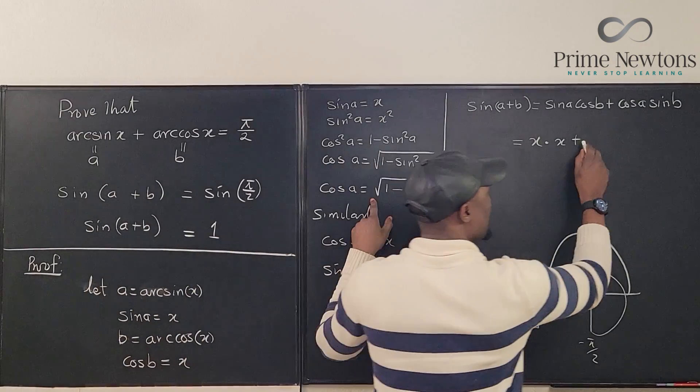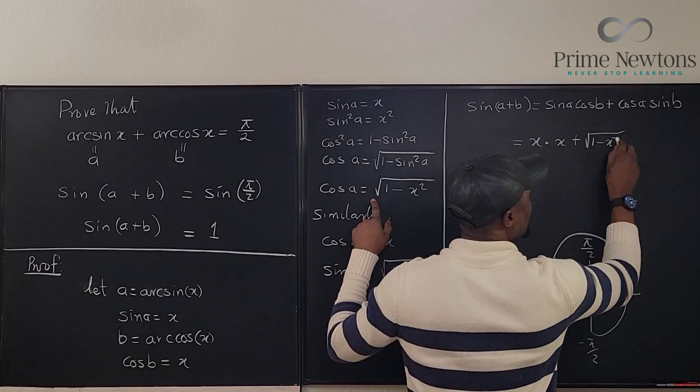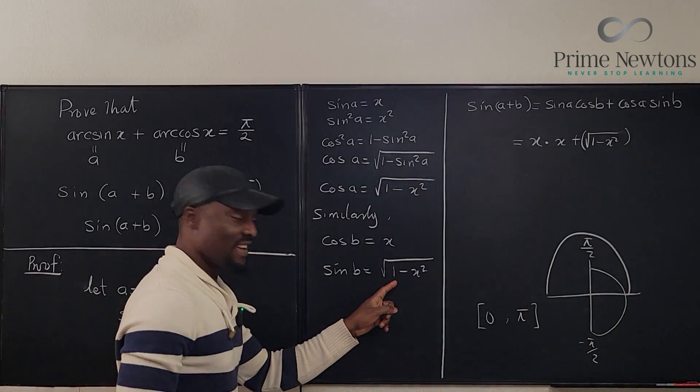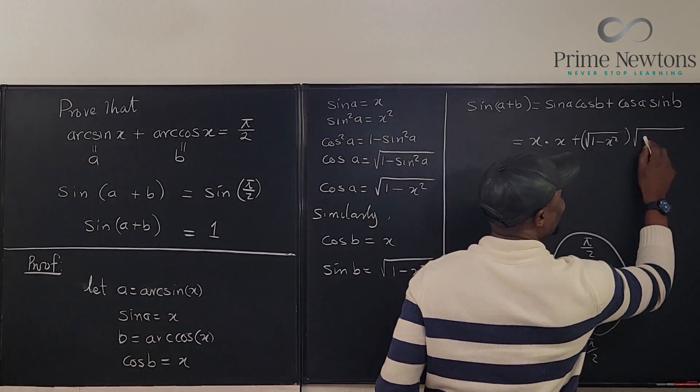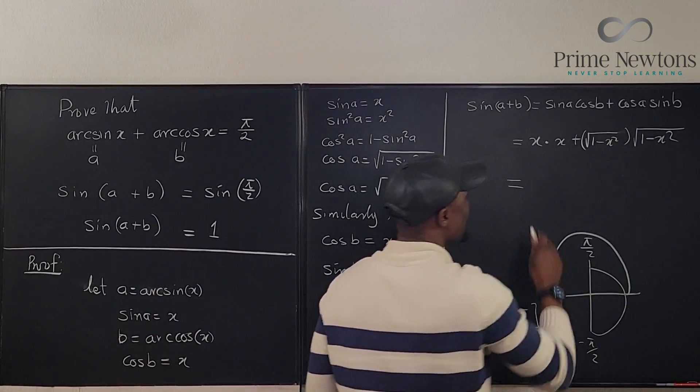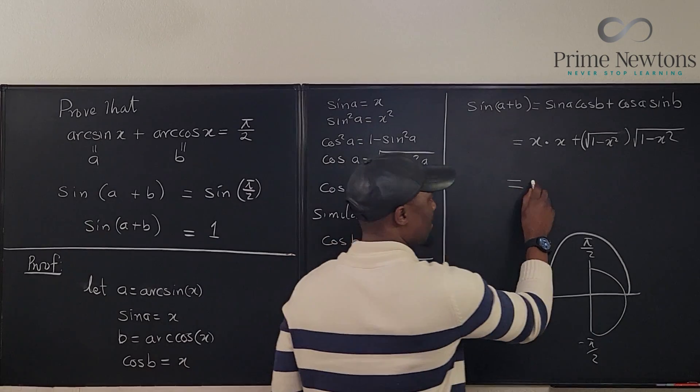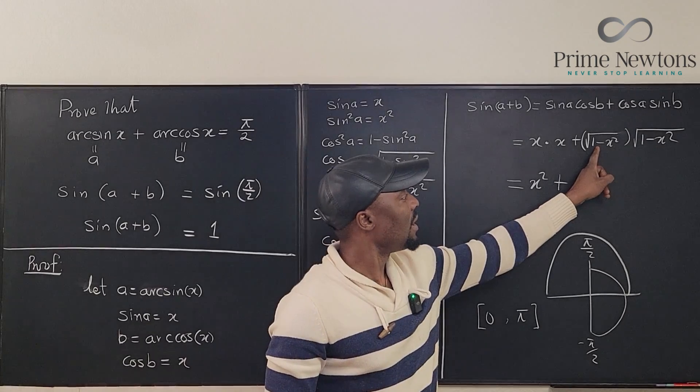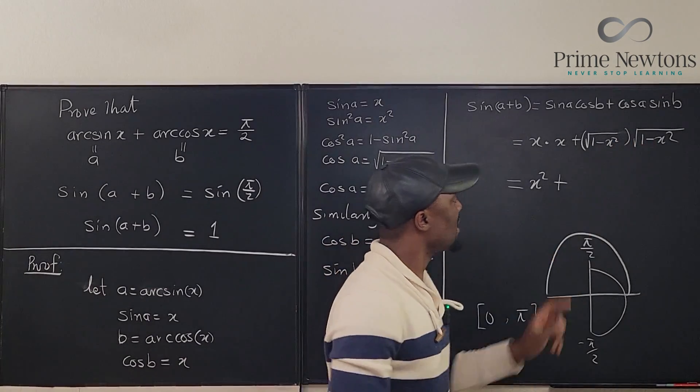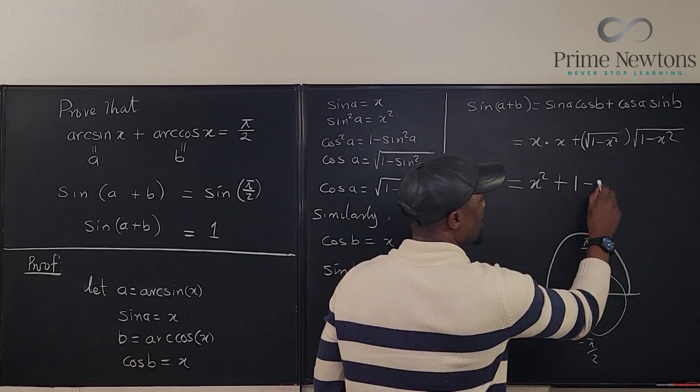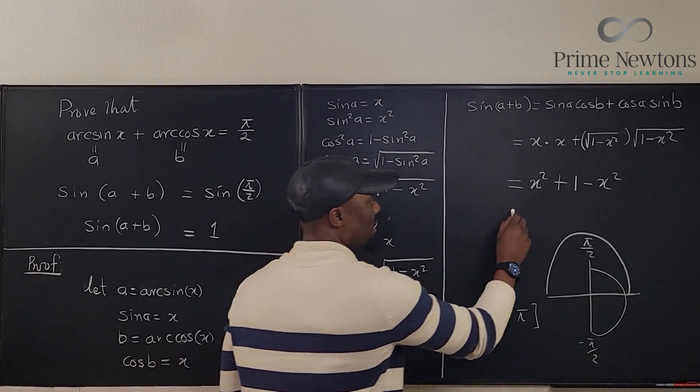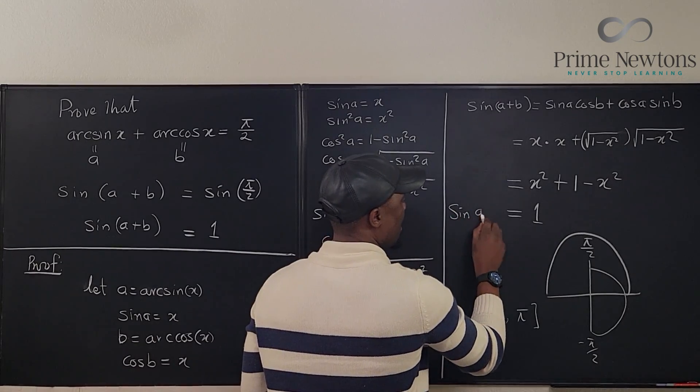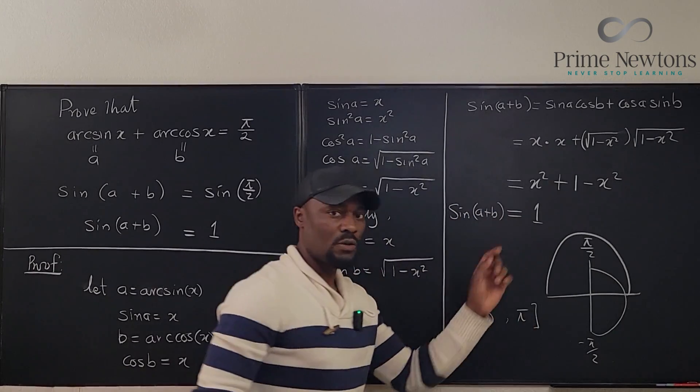Plus, what is cosine a? Right here. Square root of 1 minus x squared. And what is sine b? Square root of 1 minus x squared. So as you can see, we have x squared plus, if you multiply these two together, the square root signs will disappear and you're going to end up with 1 minus x squared. Well, this is equal to 1.